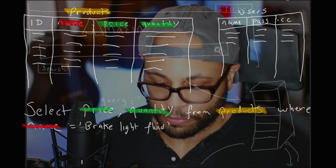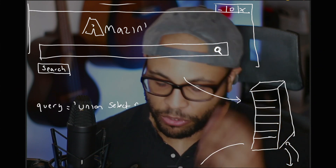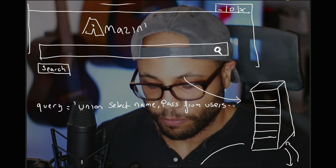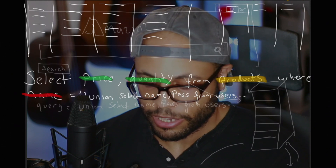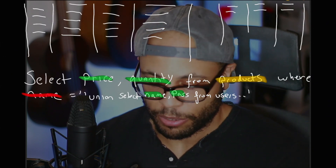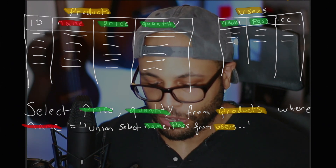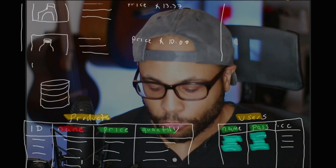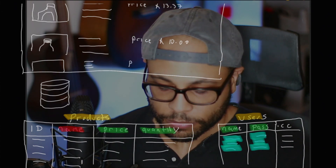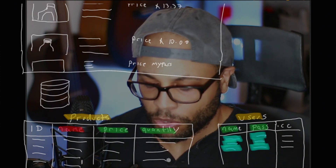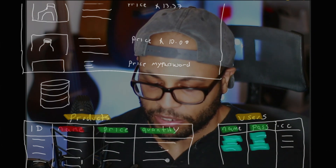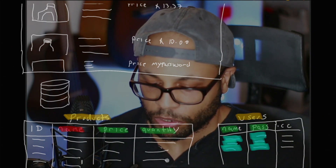So how do we exploit this? In poorly written applications, by changing what we're searching for to include SQL, we can change the actual query that is being used to search the database. Here we're using a UNION SELECT to bring back data not just from the products table, but from the users table as well. Since the application just displays whatever is returned from the database, it displays the extra row as a product, showing us the password.